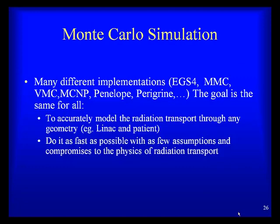There are many different flavors of Monte Carlo algorithms — EGS4, MMC, VMC, MCNP, Penelope, Peregrine — but they all share the same goal: accurately model radiation transport through any geometry, including the linear accelerator and the patient, as fast as possible with as few assumptions and compromises to the physics of radiation transport, maintaining accuracy to the extent that is clinically relevant.